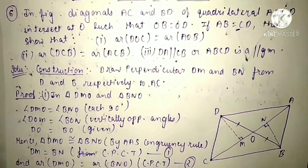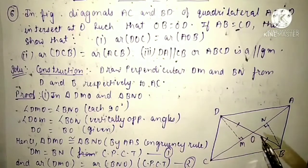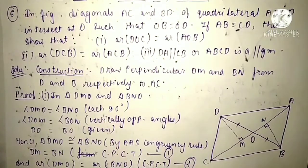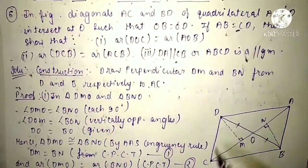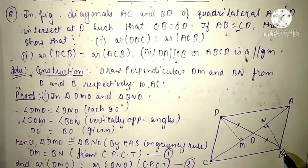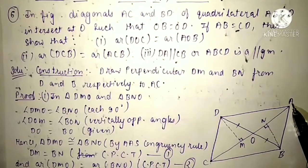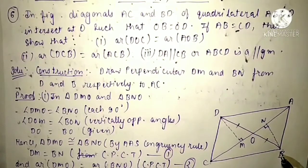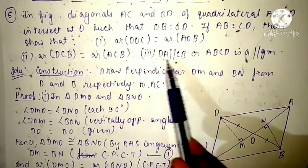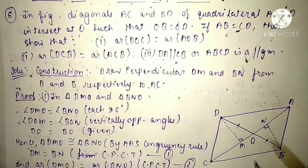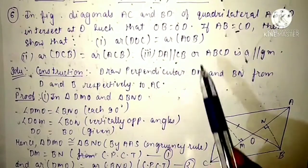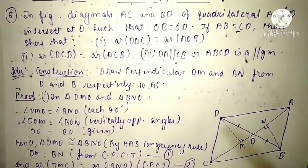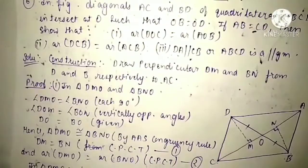We have to show that area of triangle DOC equals area of triangle AOB in the first part. In the second part, area of triangle DCB equals area of triangle ACB. And in the third part, DA is parallel to CB, or that ABCD is a parallelogram. This is what we have to prove.